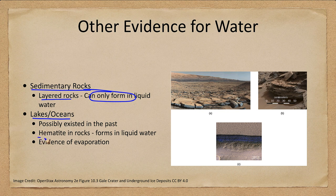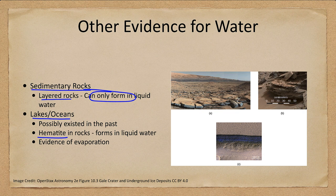Another thing we see is a mineral called hematite in the rocks, and hematite forms in liquid water as well. All of these things put together tell us that yes, Mars has had liquid water in the past.